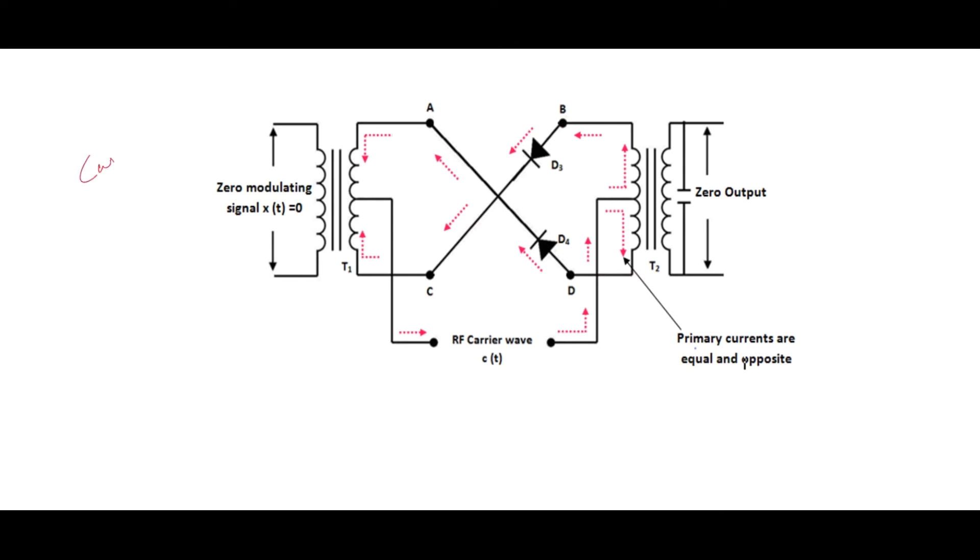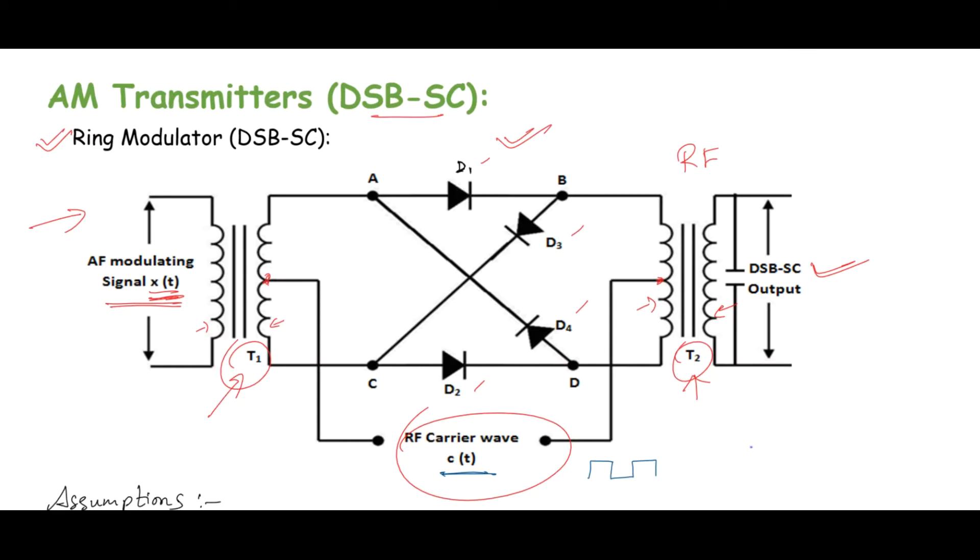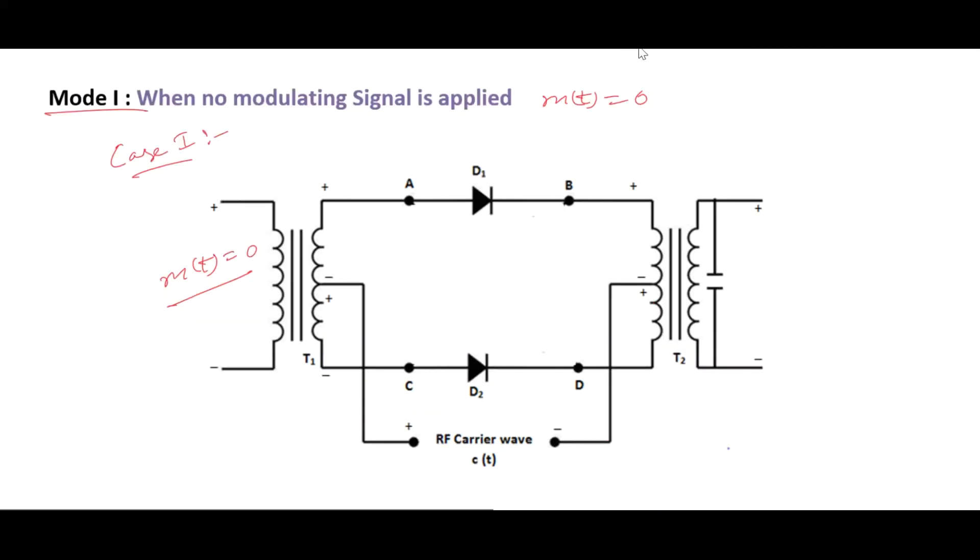Case 2 is when carrier is negative in polarity. We have already made the assumption that C(t) is a square wave. Whenever the terminal connected to center tap of secondary of T1 is positive and the other terminal is negative, diodes D1 and D2 will act as perfect switches or closed switches, whereas D3 and D4 will act as open circuits.